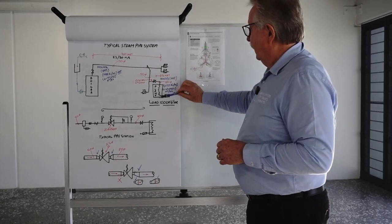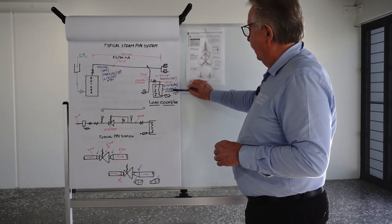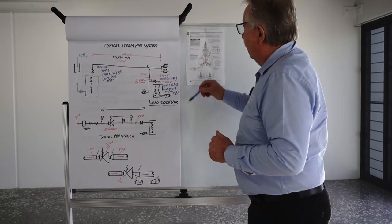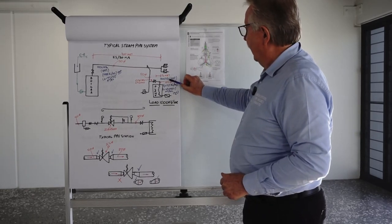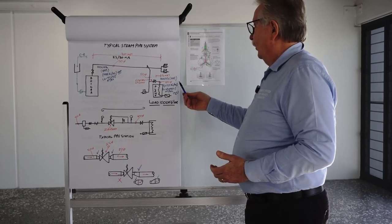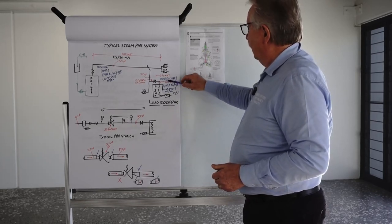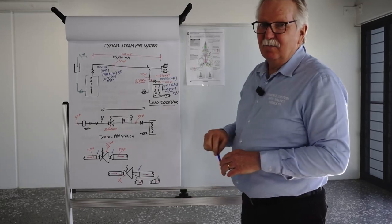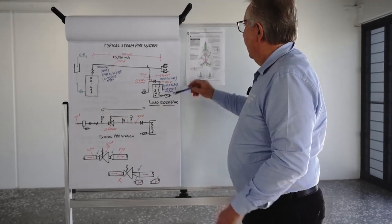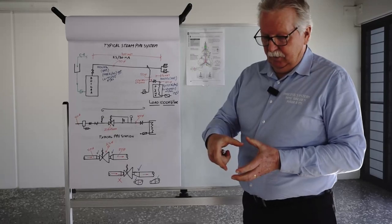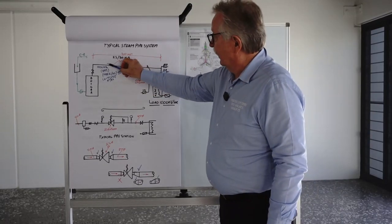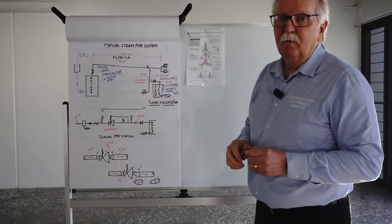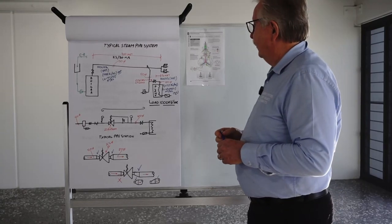Now after the PRV at 300 kPa and the increased specific volume, we would end up with a size again using 25-30 metres a second roughly, it's only a short run of pipe, I've elected it to be about 6 metres of pipe. We would end up with an 80 mil pipe, so we've got a 50 mil here and an 80 mil nominal bore pipe at the point of usage.